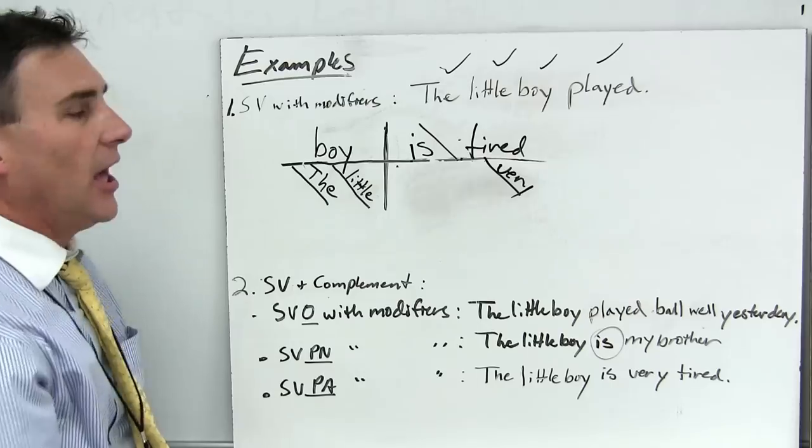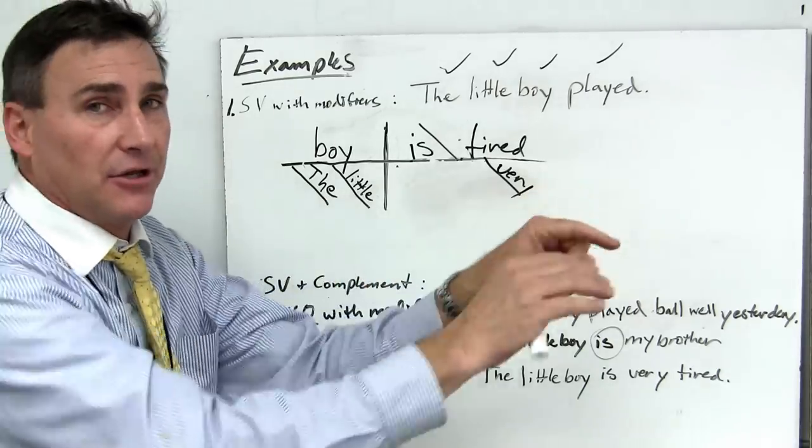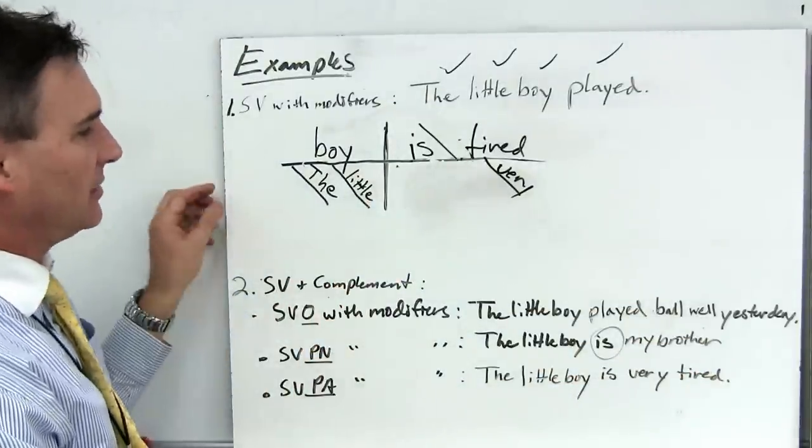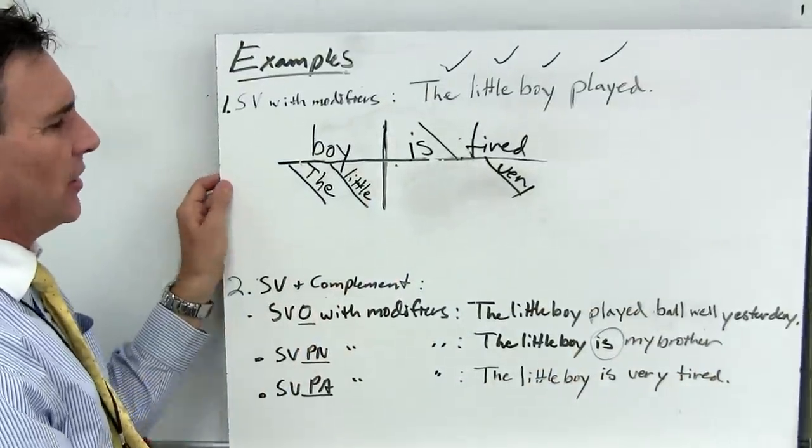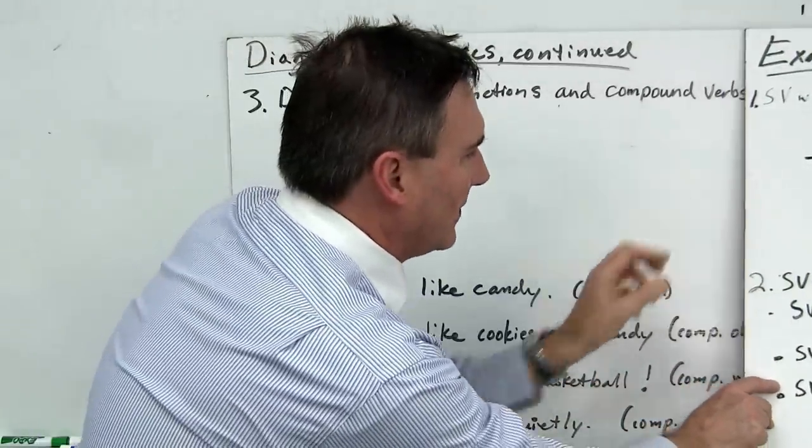So there we have a predicate nominative and a predicate adjective in the two examples using the linking verb to be. And we also covered a straight up transitive verb, a verb that acts on another thing that takes an object. We had a transitive verb with an object. In that case, played. Let's take a look at a few more examples and dig a little bit deeper, shall we?